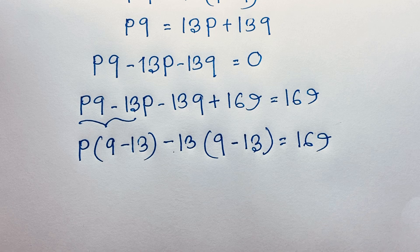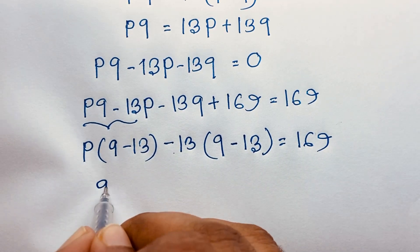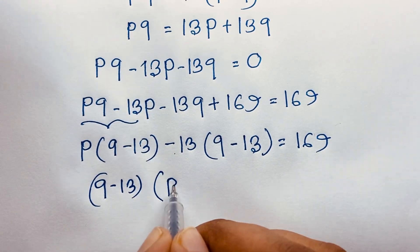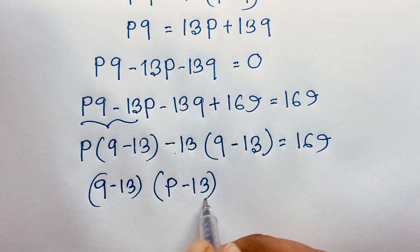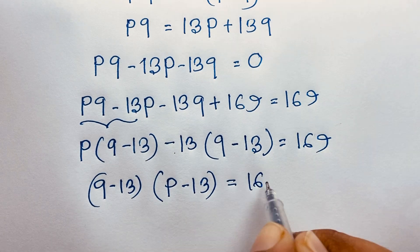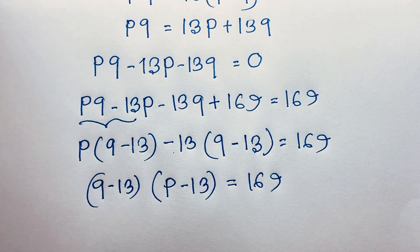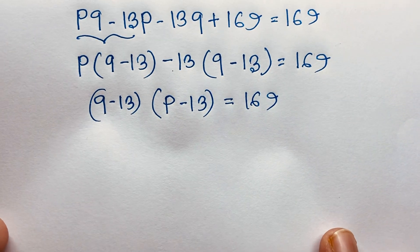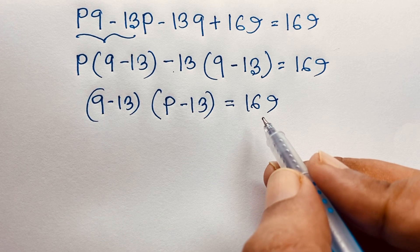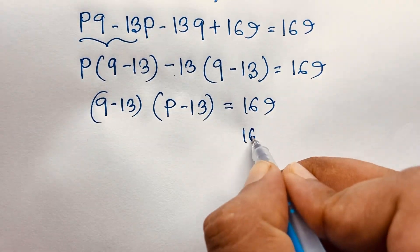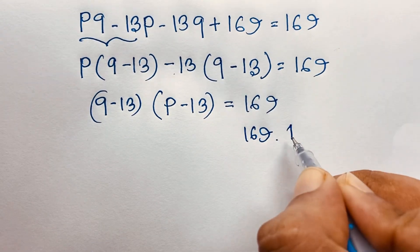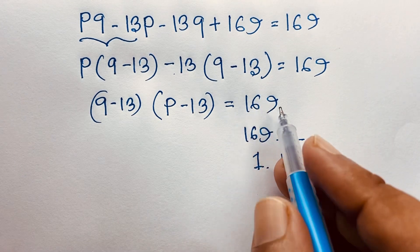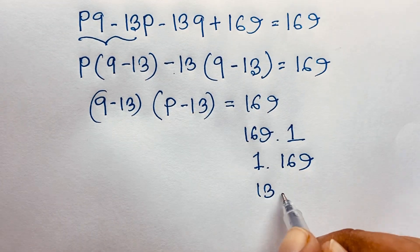Now you can see easily here, (Q minus 13) is common. So taking (Q minus 13) as common gives (Q minus 13) times (P minus 13) is equal to 169. Remember that P and Q are positive integers. So we find the factors of 169: it is 169 times 1, 1 times 169, and 13 times 13.